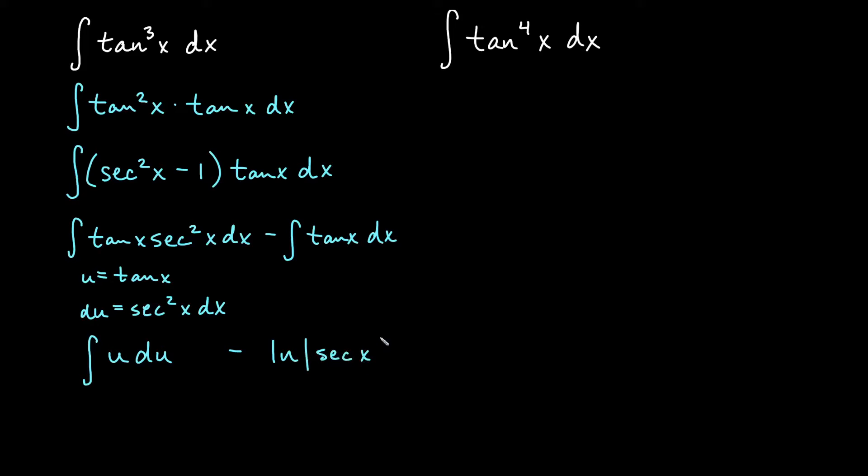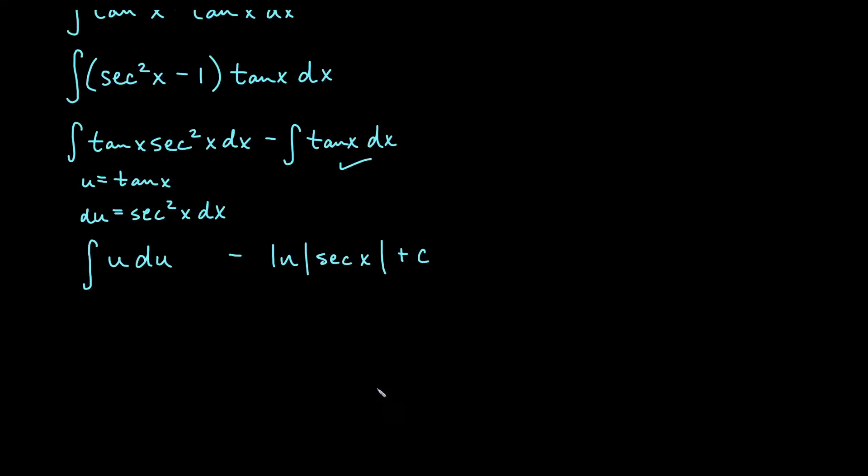So you could go ahead and say that this is minus ln of absolute value of secant x. The integral of u du, that's super easy. That's just power rule. So we'll get one half u squared minus our ln of absolute value of secant x plus c.